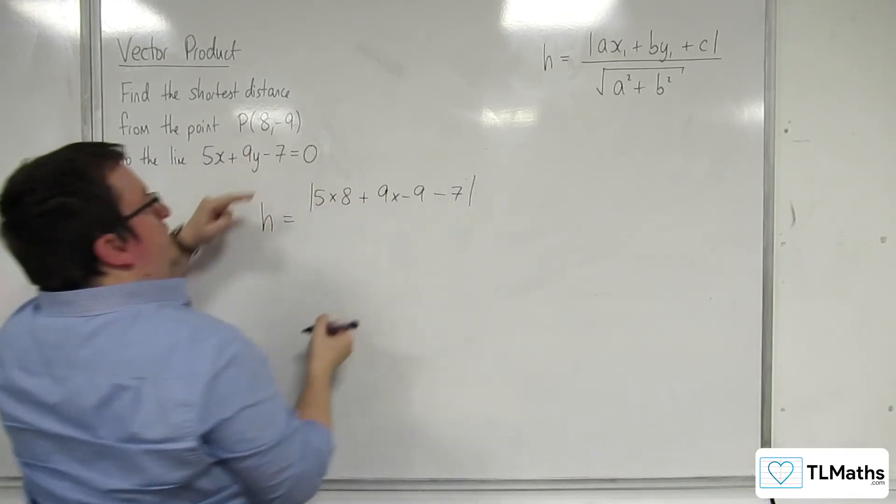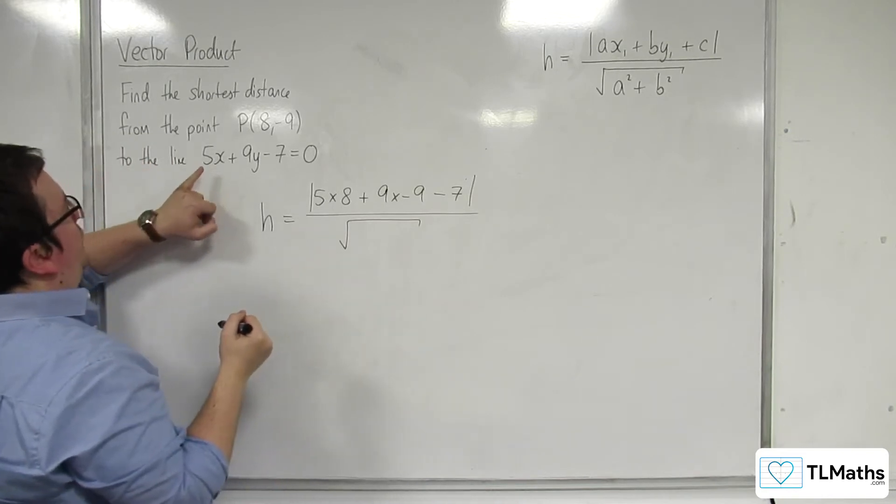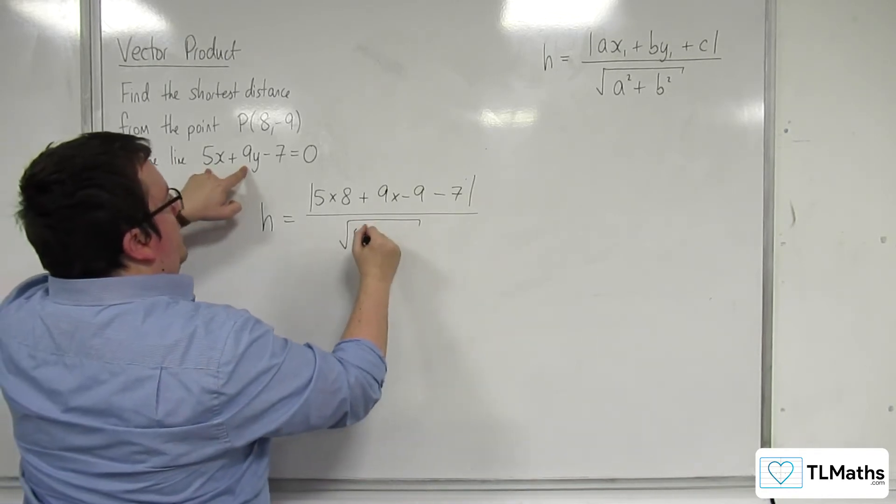We're going to take the modulus of that, divided by the length of a squared plus b squared, so that's 5 squared plus 9 squared.